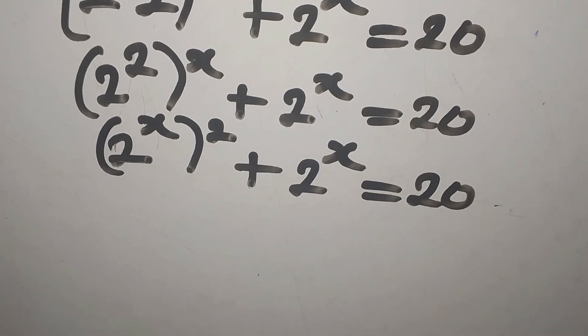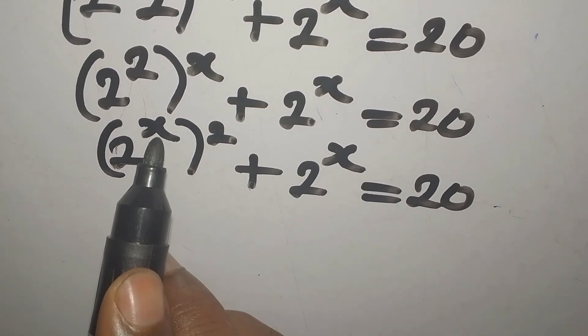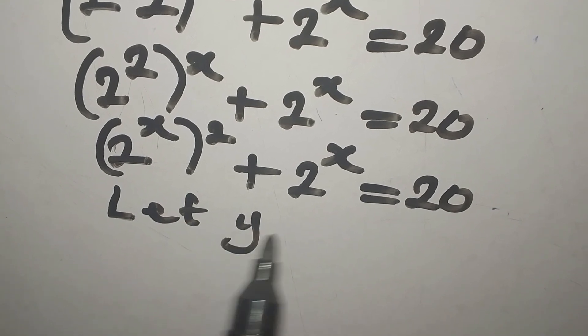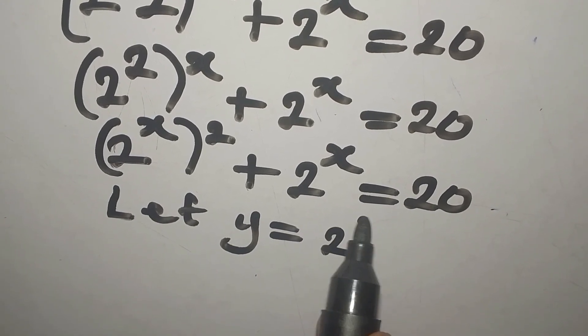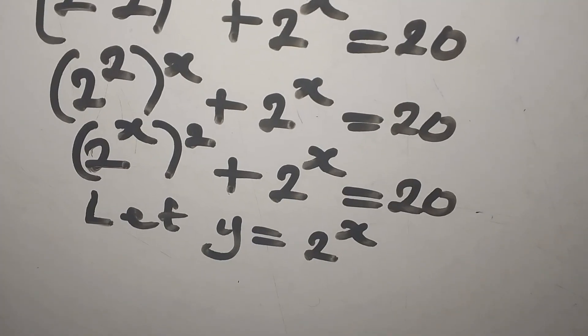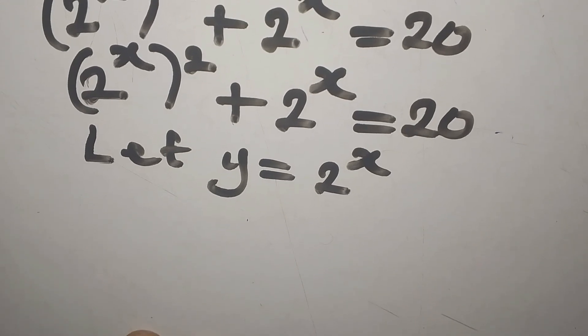Remember that we're having 2 to the power of x in two places, so we can replace it. Let y be equal to 2 to the power of x. This means that anywhere we find 2 to the power of x, we are going to write y.